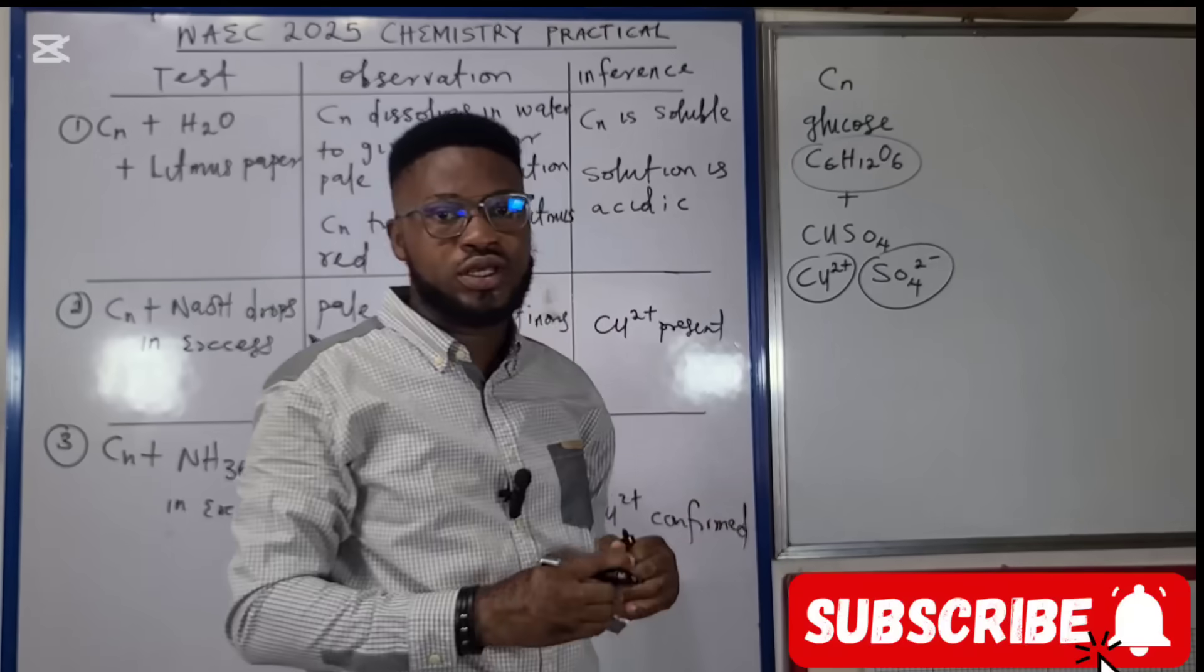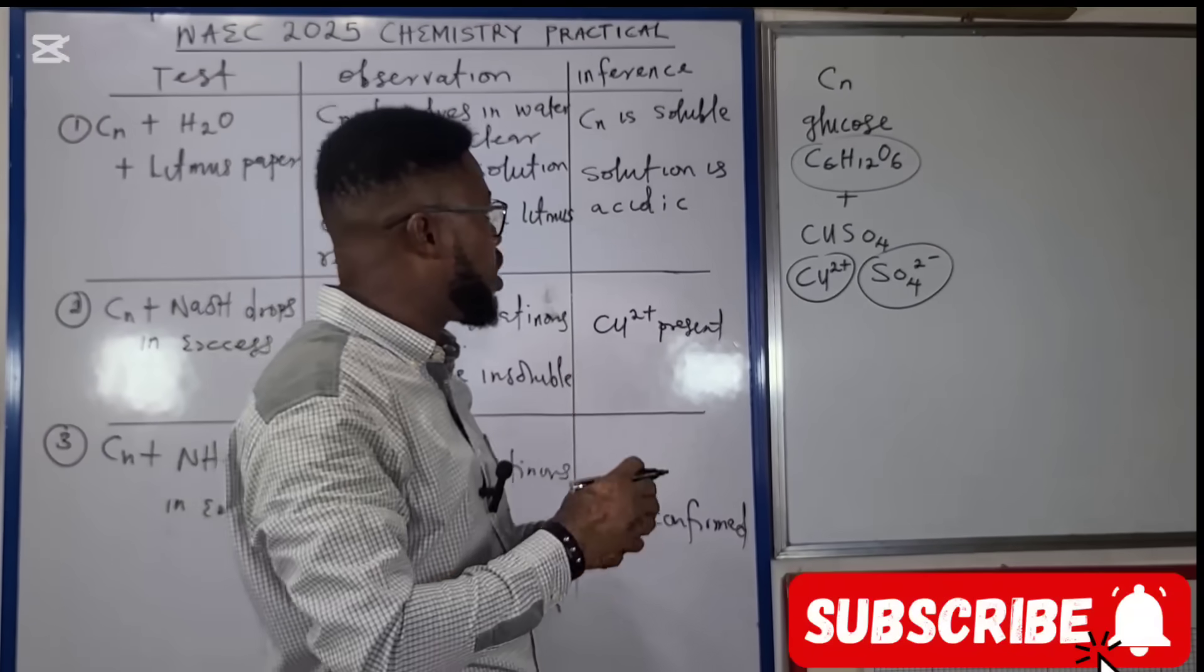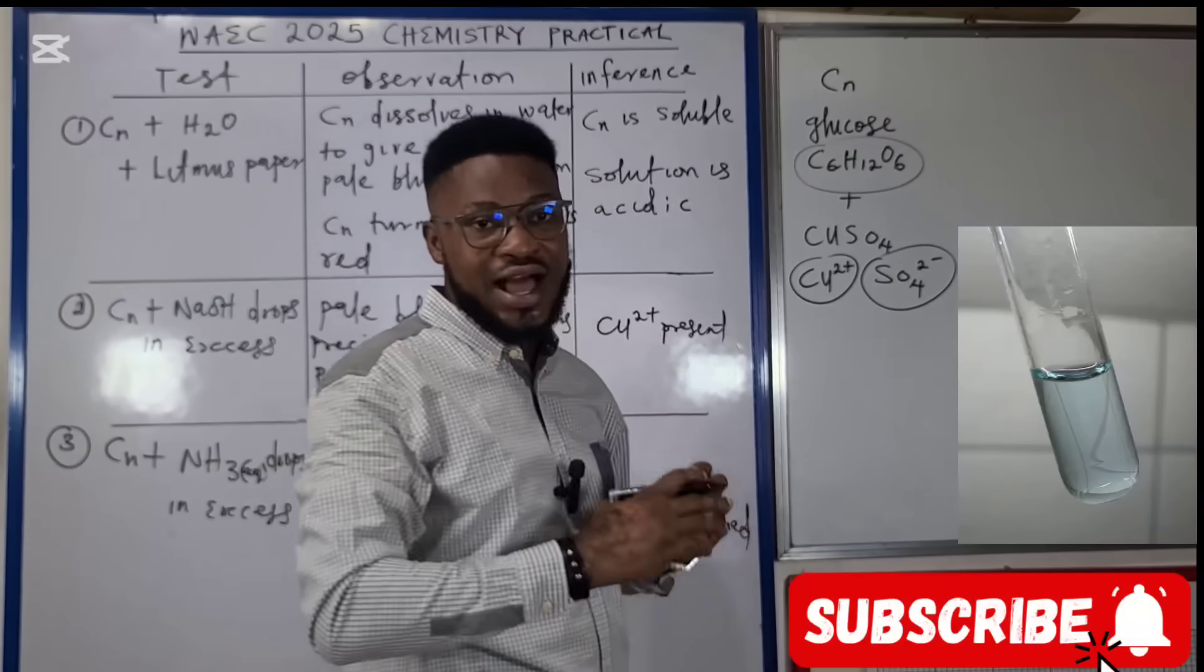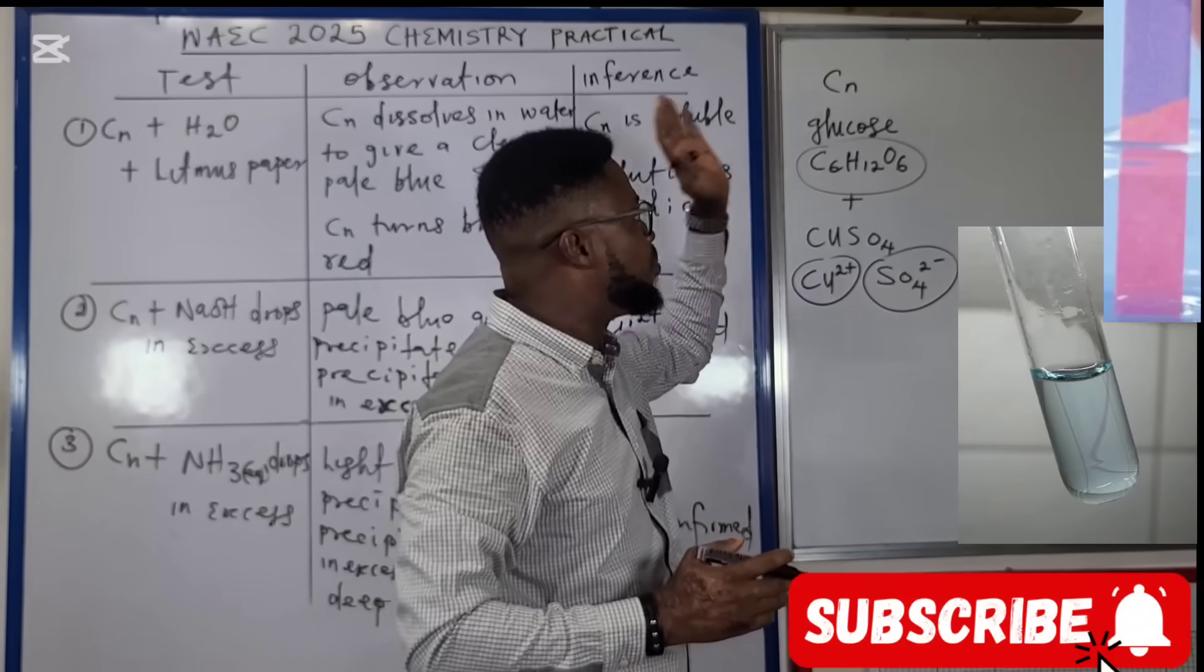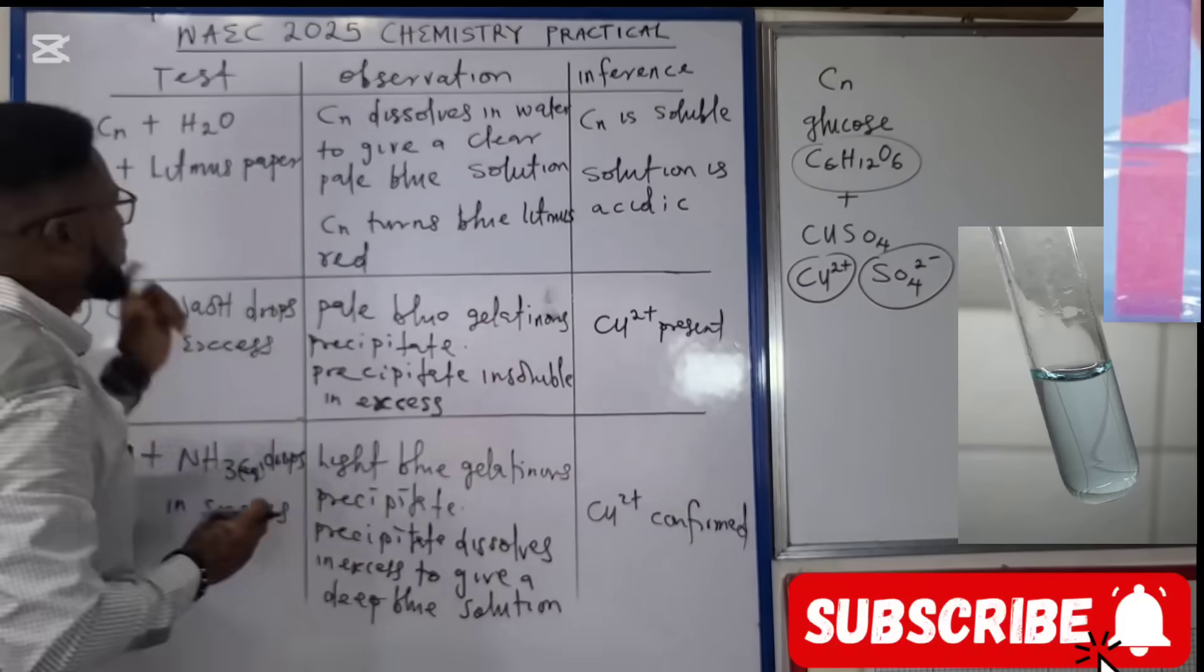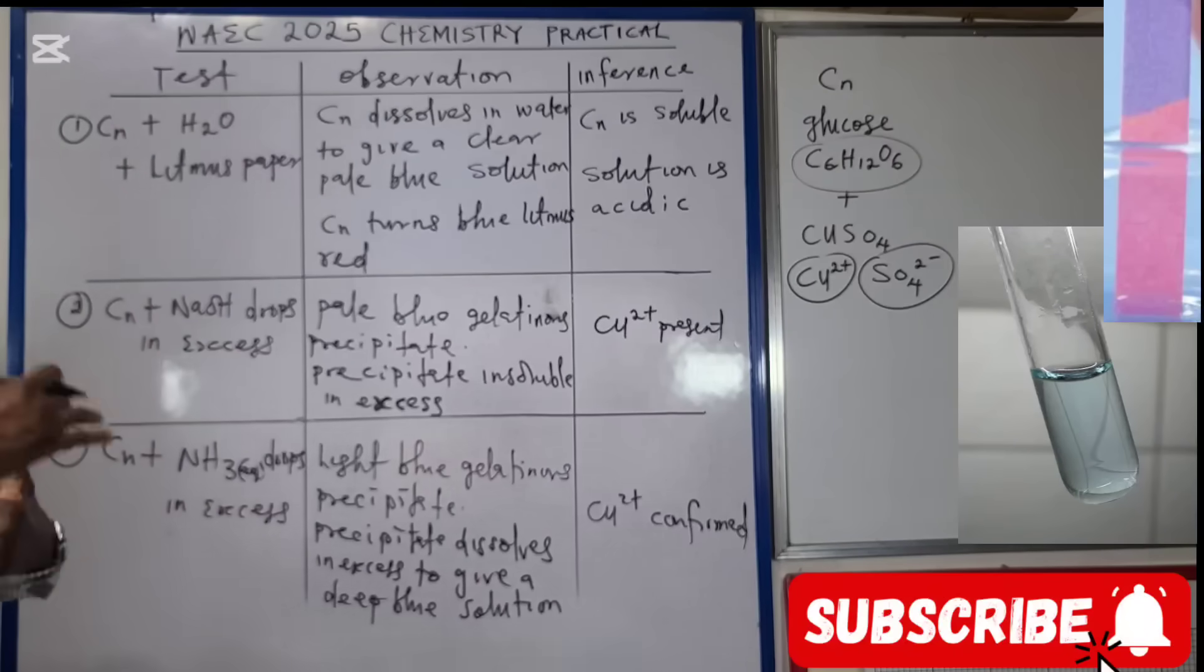By the time we put it in a test tube, add about 10 cm³ of distilled water and stir, we're going to find that they are going to dissolve because they are soluble. In which case you record that CN dissolves in water to give a clear pale blue solution, as you can see in the diagram on your screen.